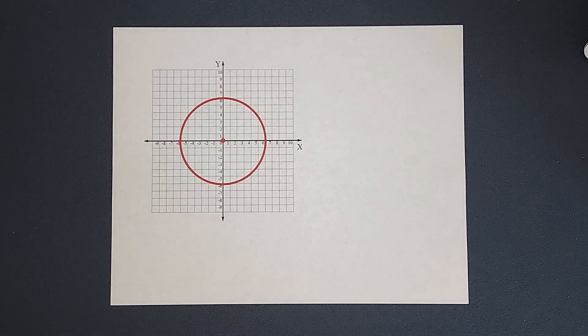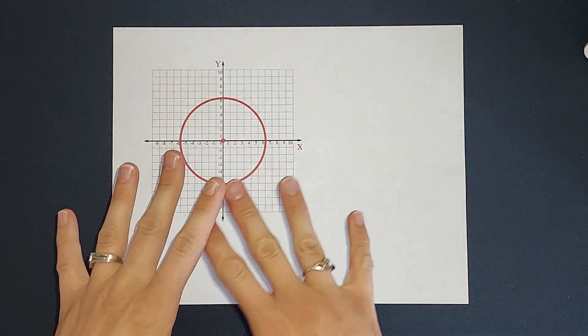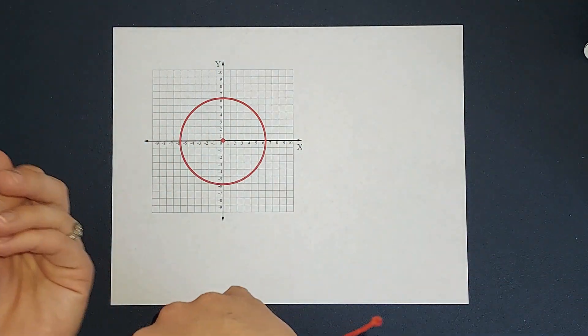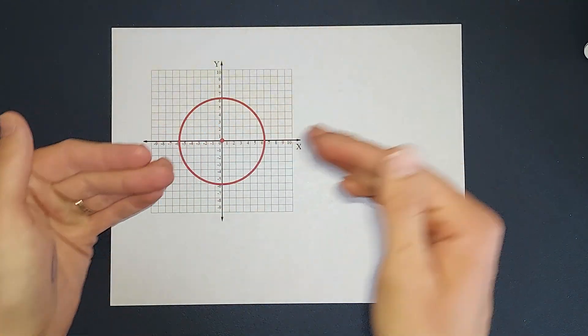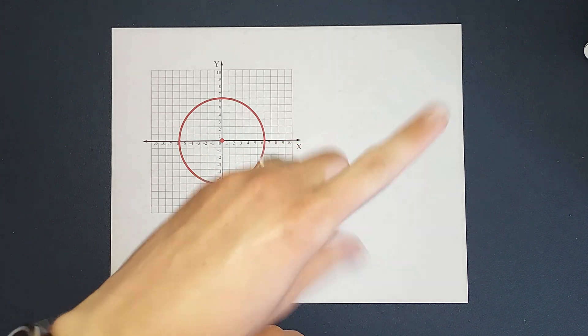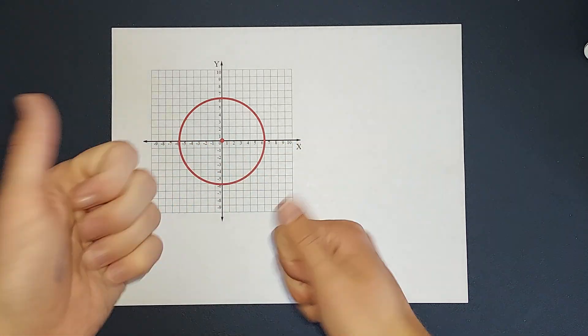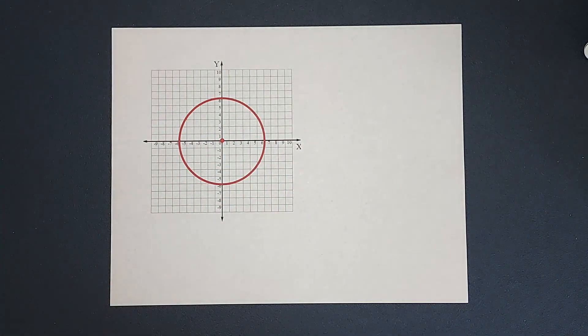Hey guys, we have the graph of a circle and we want to figure out what the equation for this is. Now maybe you've been going the other way, you've been given the equation and you've been graphing them. But now we're going the other way, we're given the graph and they want to know the equation.